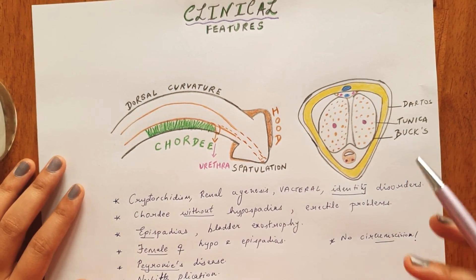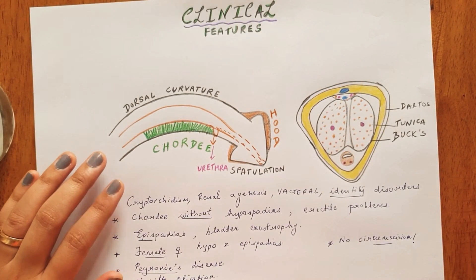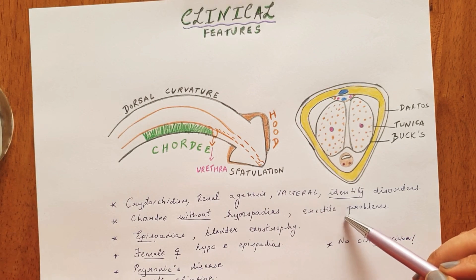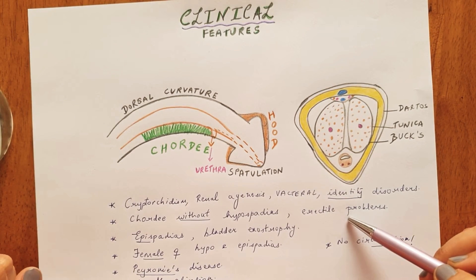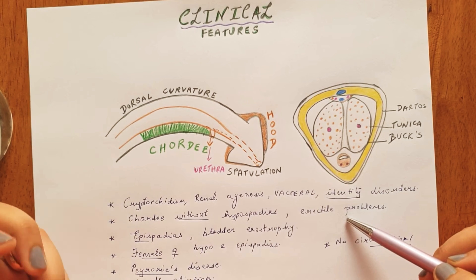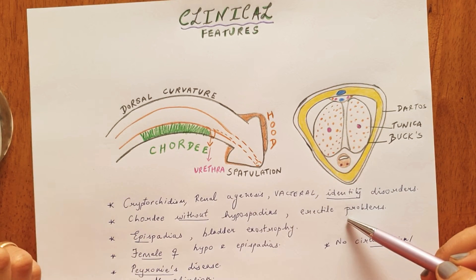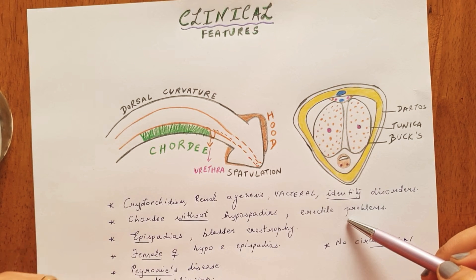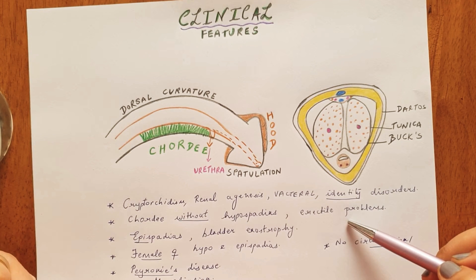There is a condition also known as chordee without hypospadias, which can be spontaneous and leads to erectile and sexual dysfunction, also requiring surgical correction. These are common viva questions: can chordee happen without hypospadias? Yes it can. And can hypospadias occur in females? Yes, it can also happen.